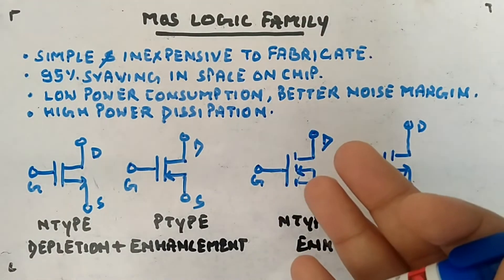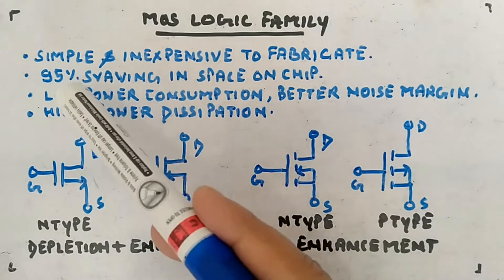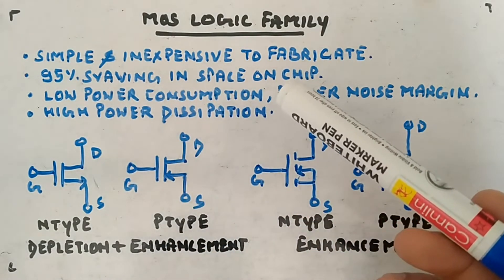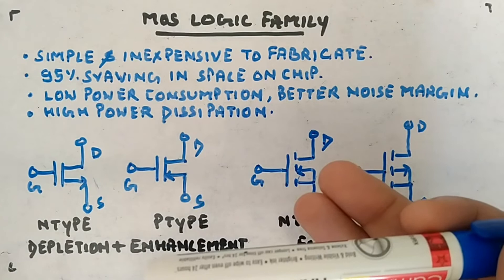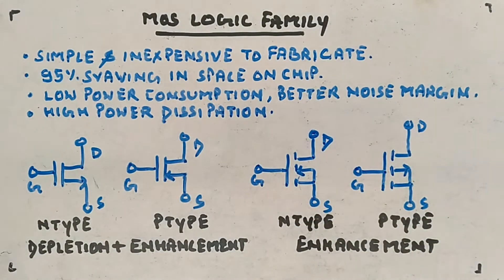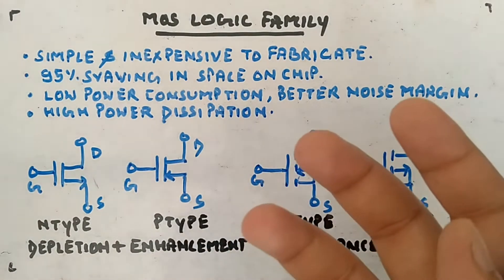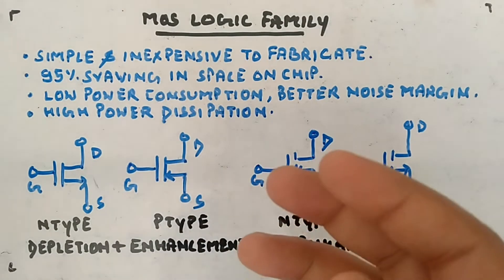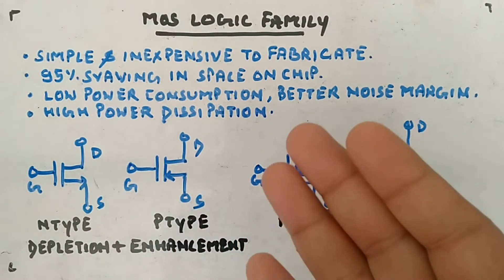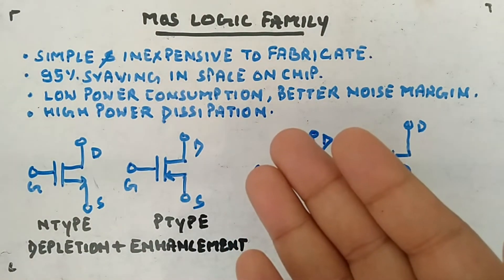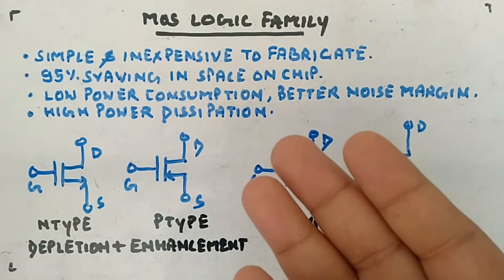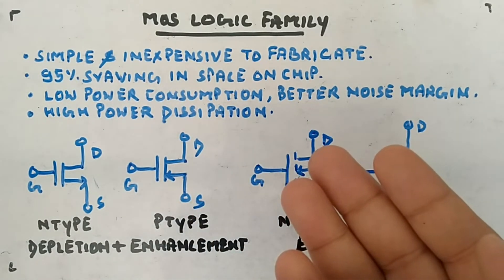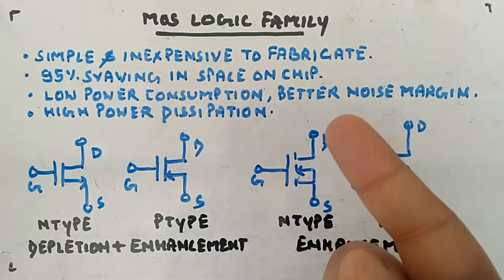95% saving in space on chip means it takes very less space in the silicon chip. Hence, you will have more density on the chip because you don't need diodes, transistors, resistors, or capacitors for its operation.